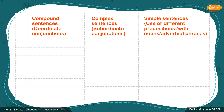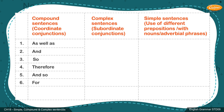Compound sentence coordinate conjunctions: 1. As well as. 2. And. 3. So. 4. Therefore. 5. And so. 6. For.